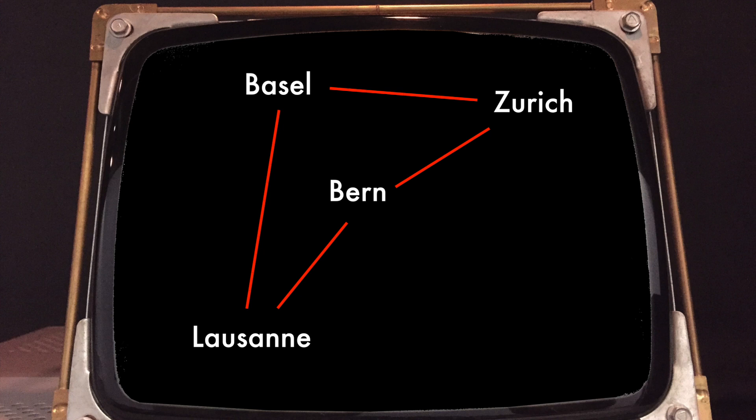Any such tour can easily be encoded by the order in which the cities are visited. For instance, the tour that I displayed corresponds to the order Lausanne, Basel, Zurich, Bern, and then back to Lausanne.